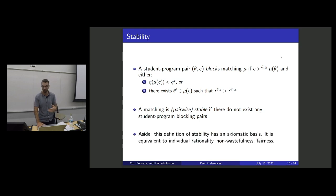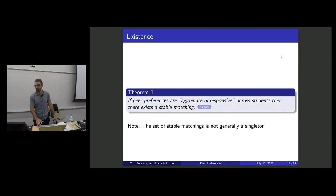And so a matching is going to satisfy this notion of pairwise stability if there are none of these blocking pairs. And as an aside in the paper, we give some axiomatic basis for why we think this is the right notion of stability.